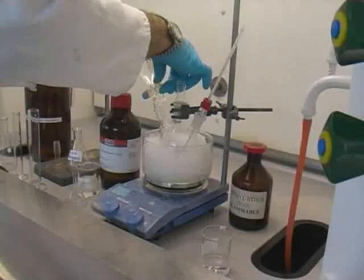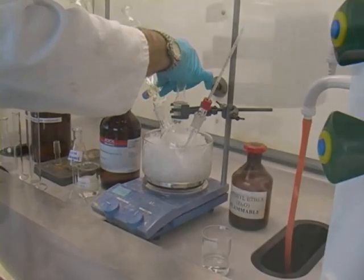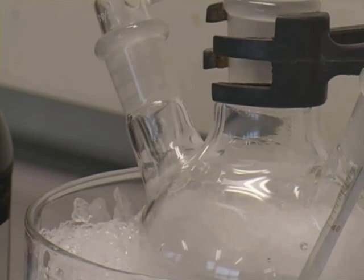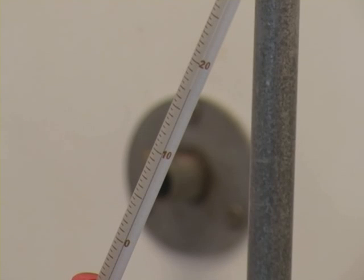Add 40ml of water to the dropping funnel and slowly add drop at a time to the round bottom flask. Do not allow the temperature to exceed 25 degrees centigrade. This procedure cannot be hurried and will take about 20 minutes.